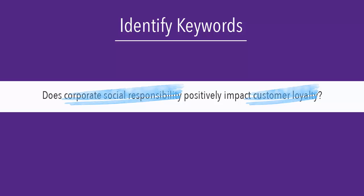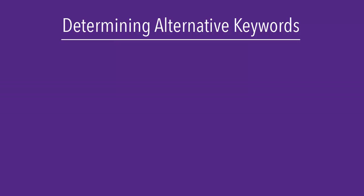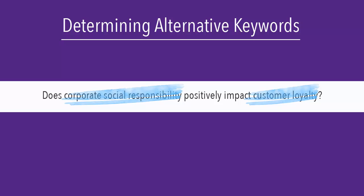You may have more than two keywords, but you should always have more than one. If you only have one keyword, your topic is probably too general to present a good argument in your research paper.